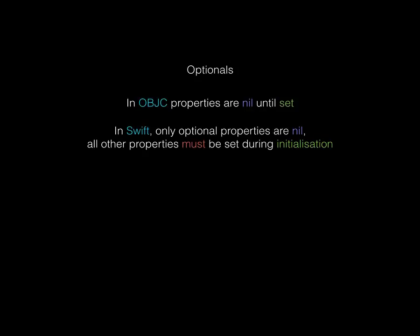In Swift: all properties that are optional will default to nil, and all other variables must have a value. You know that if a variable is marked as optional it may or may not have a value, but all others will have one at runtime — enforced by the compiler. It will never be possible to send a message to an object and get silent failure in Swift.